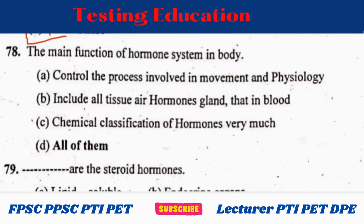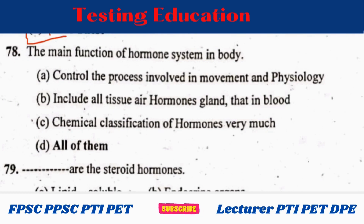The main function of the hormone system in the body is to control the processes involved in movement and physiology. It includes all tissues, air, hormone glands, and blood. The chemical classification of hormones includes all of these.